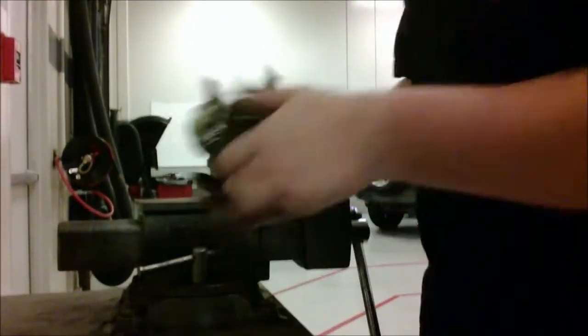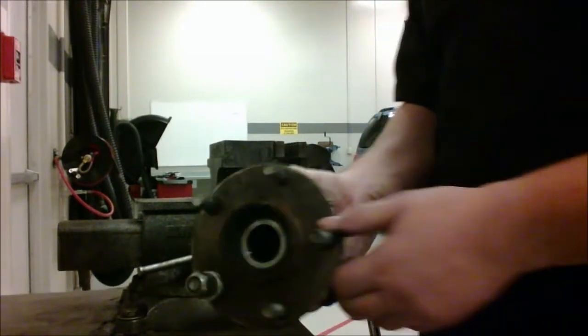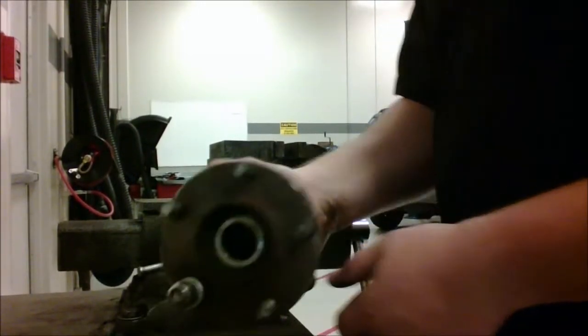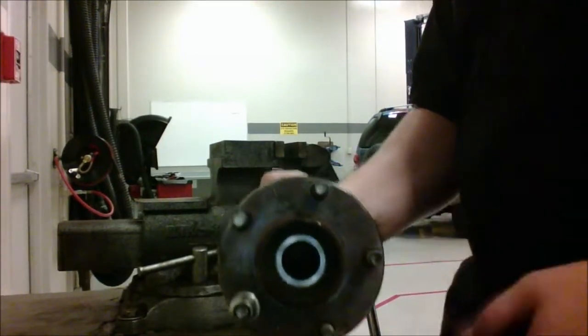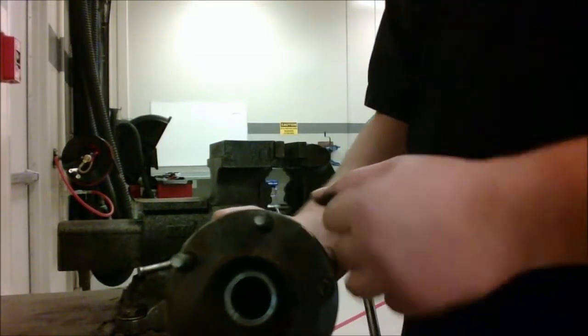First, you're going to want to have it down to the wheel hub. So this is the wheel hub, the rotor pretty much goes on here, and the wheel and tire goes on the rotor, and that's how you have your wheel assembly.